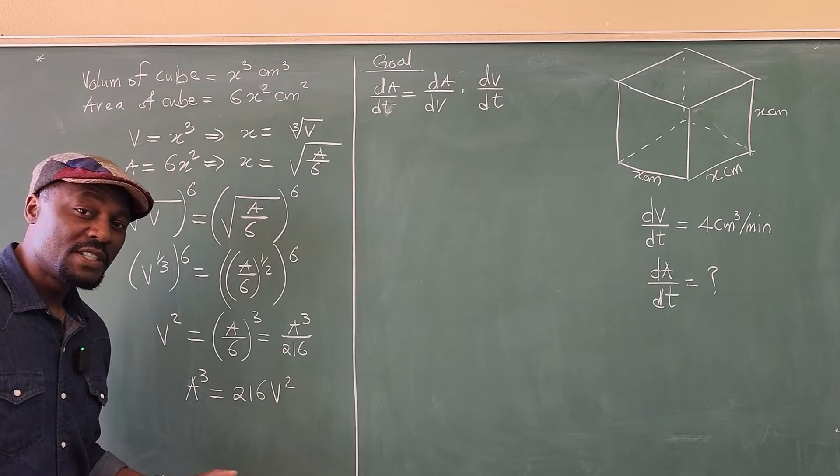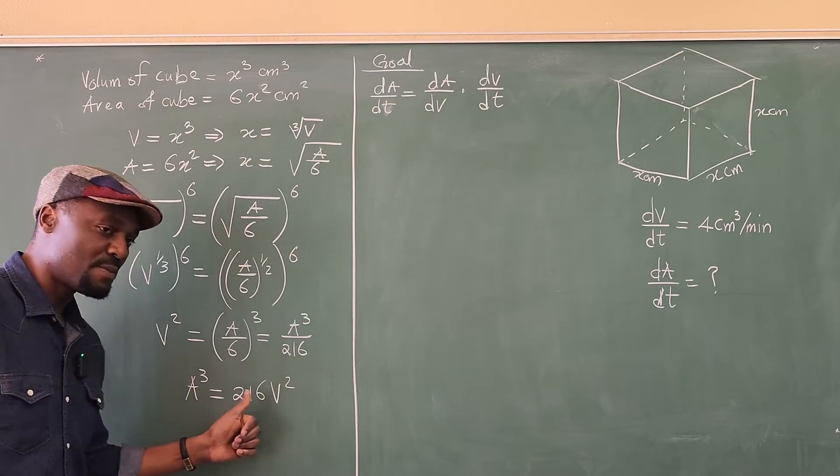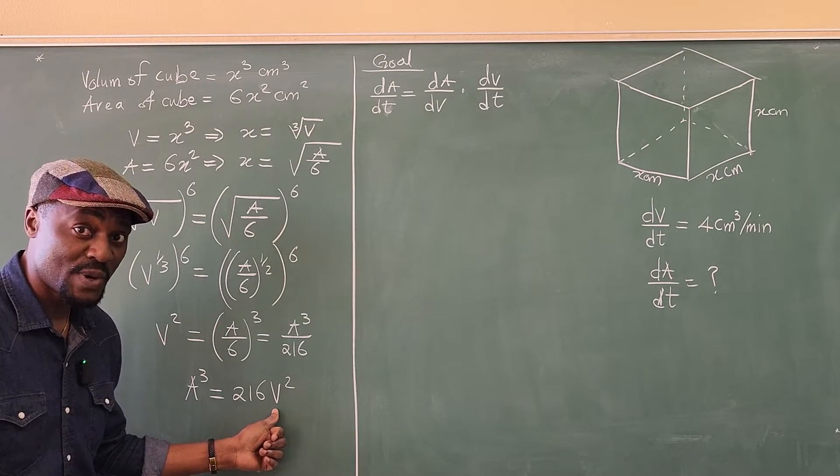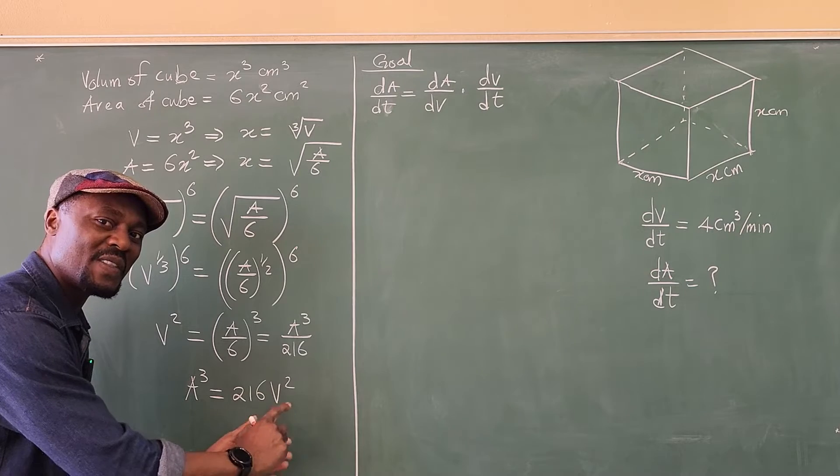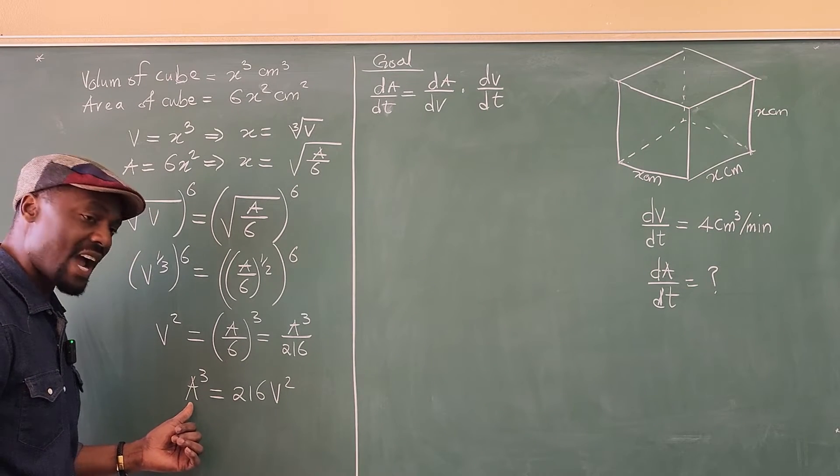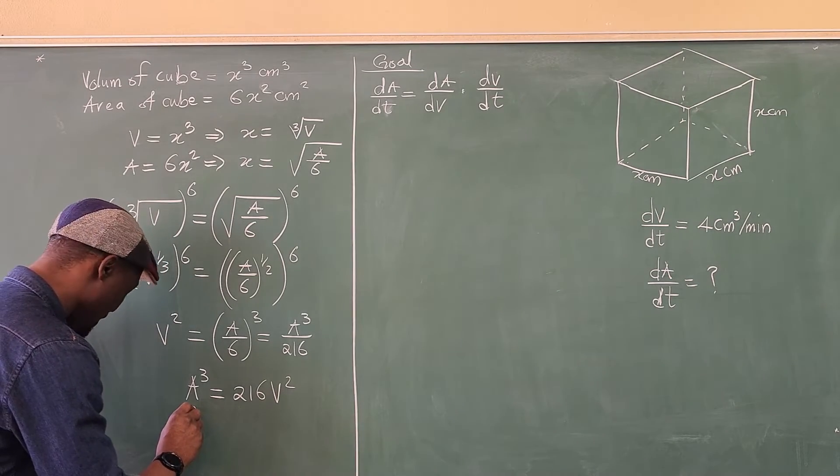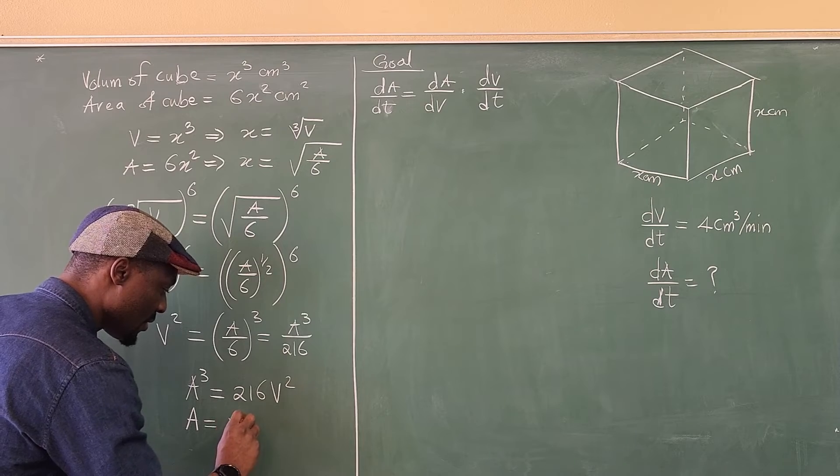So if you want to differentiate this with respect to V, you're differentiating A with respect to V. There are two ways you can do it. You can isolate A, but then you're going to have the cube root on this side, which I don't think it's bad. Actually, let's isolate A. We're going to have A say that dA/dV is equal to the cube root of 216 times the cube root of V squared.